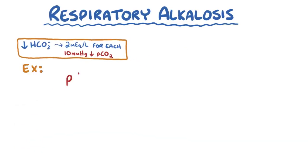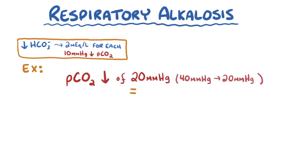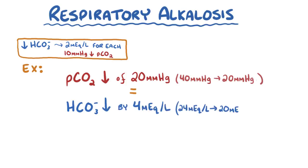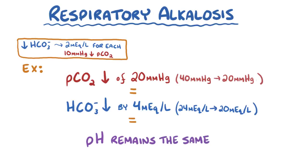As an example, if pCO2 has an acute drop of 20 mmHg — let's say it moved from 40 to 20 — then this mechanism could only decrease plasma bicarbonate by 4 mEq/L, from its reference value of 24 to 20, which does not have a big impact on pH. Therefore, the pH remains high during this acute phase of the disorder.